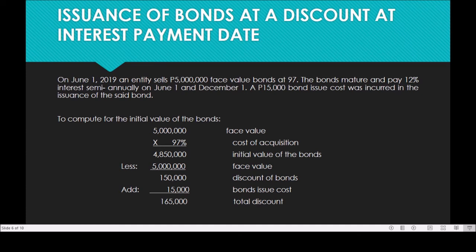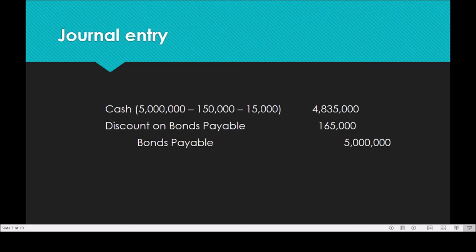To prepare the journal entry for this transaction: debit cash for 4,835,000 — which is 5,000,000 minus the discount of 150,000 minus the bond issue cost of 15,000, giving net cash of 4,835,000. The total discount on the bonds is 165,000. Credit bonds payable at its face value of 5,000,000 pesos.